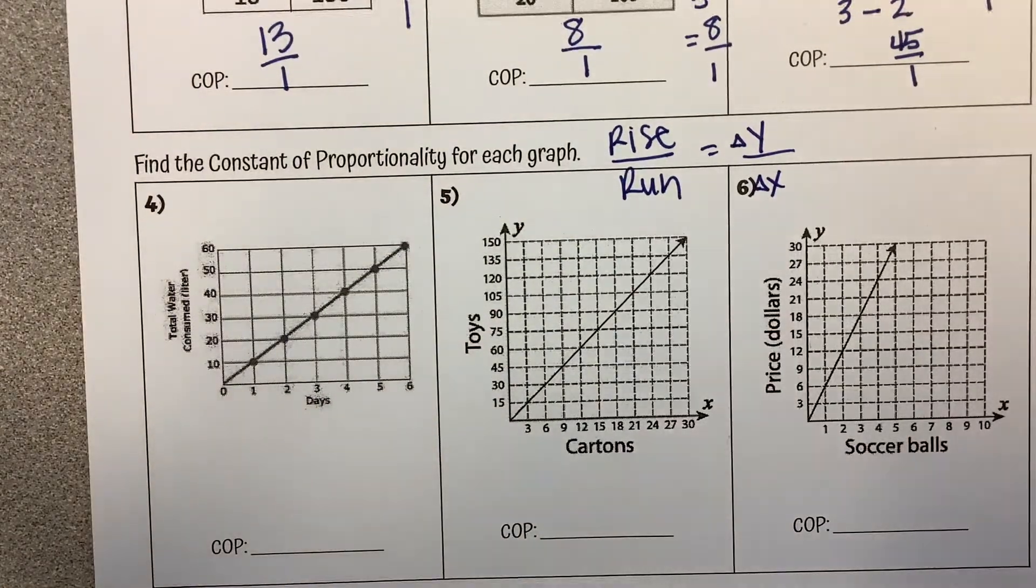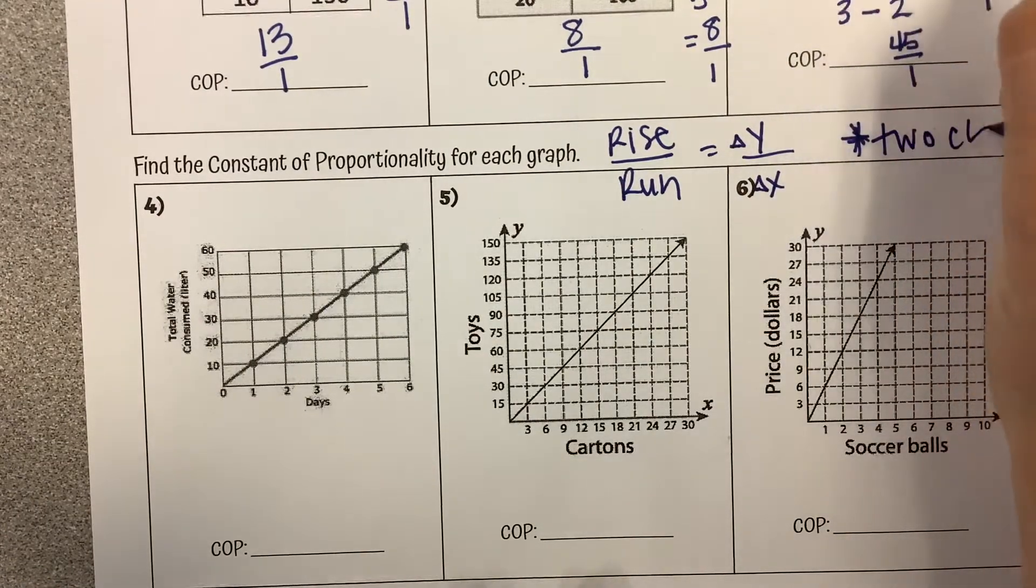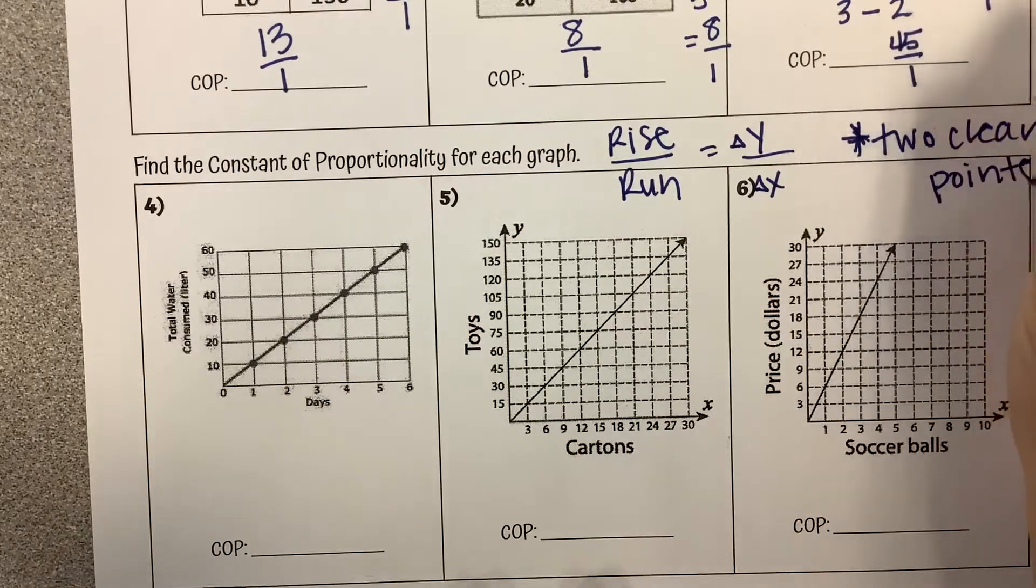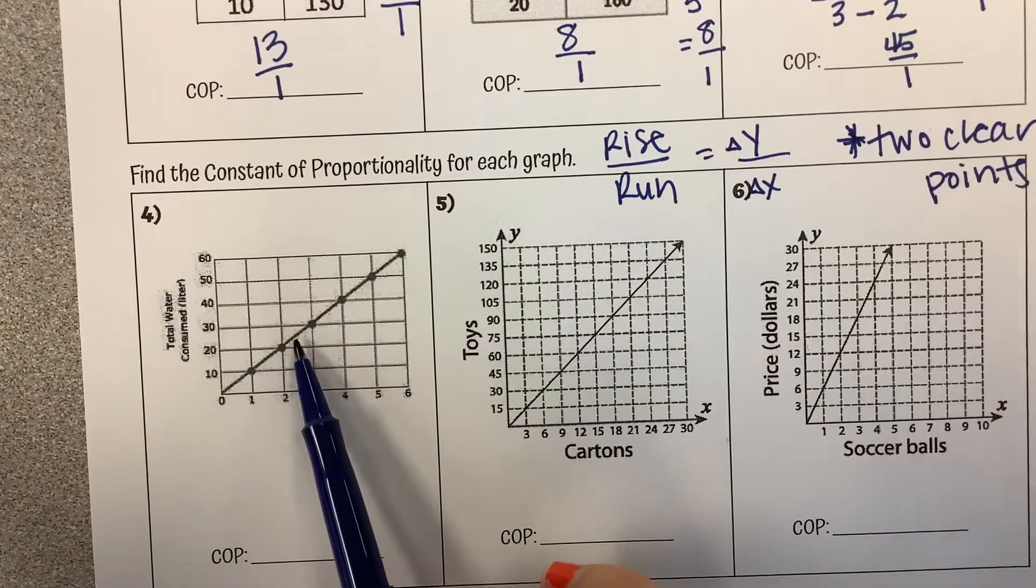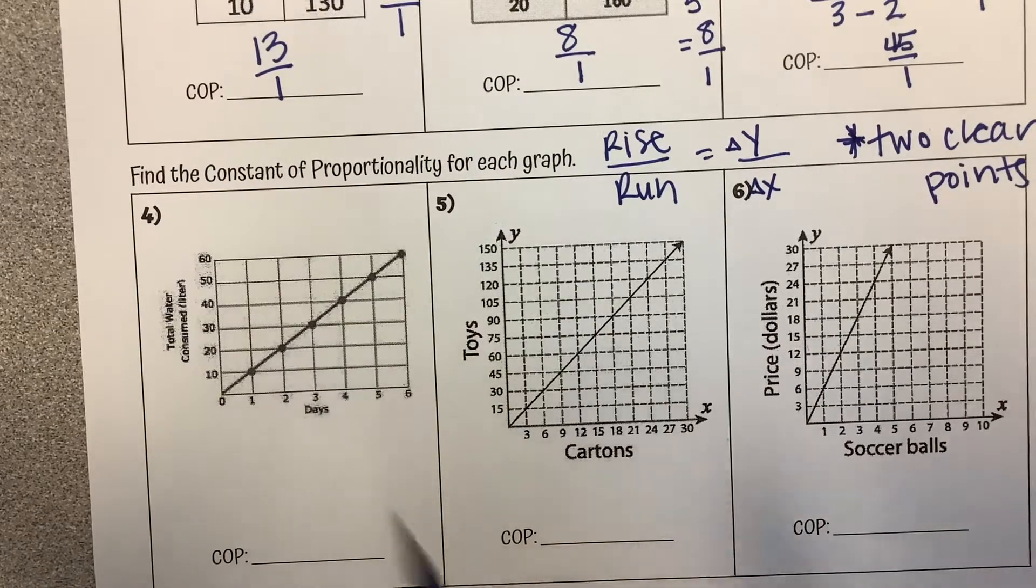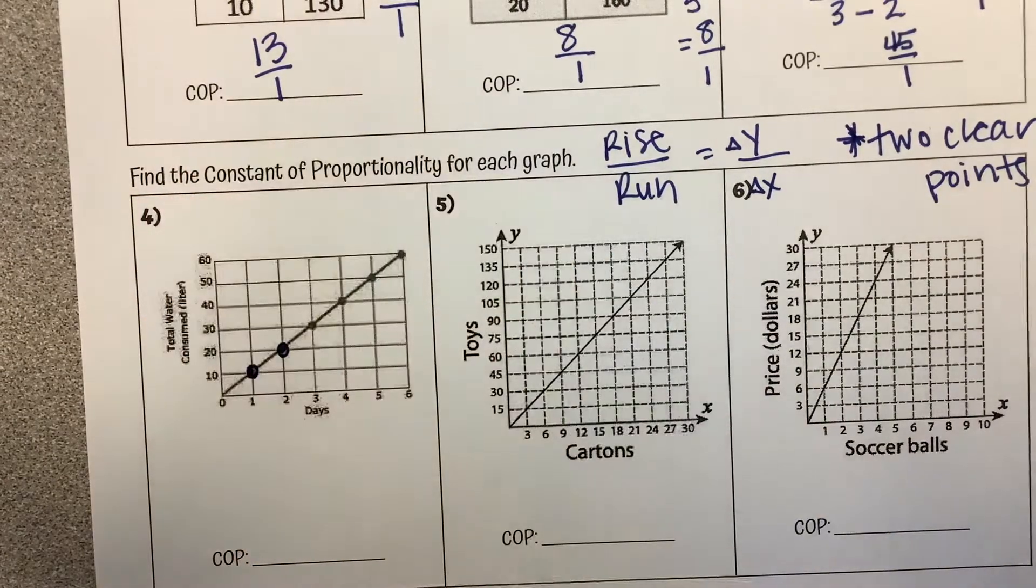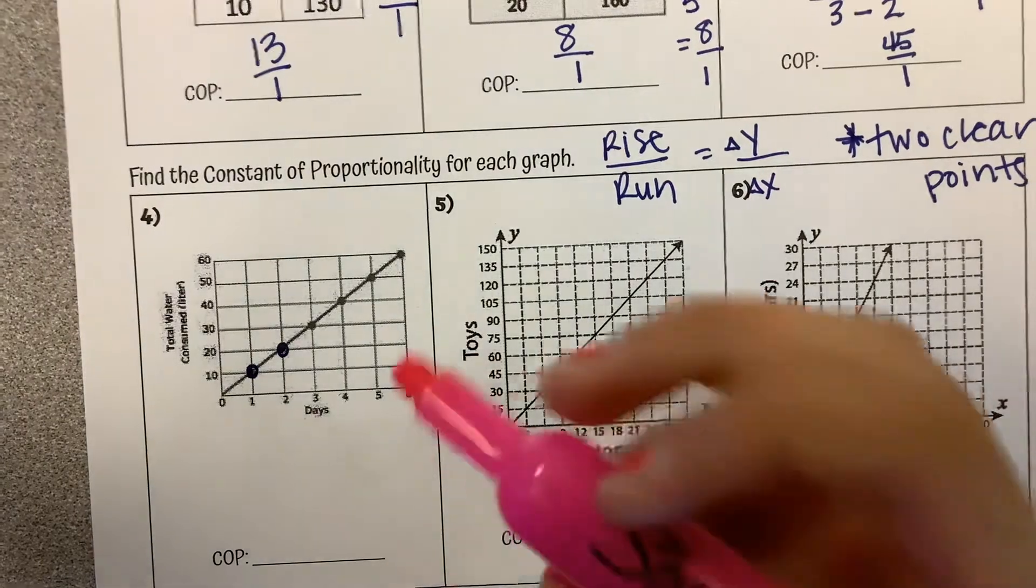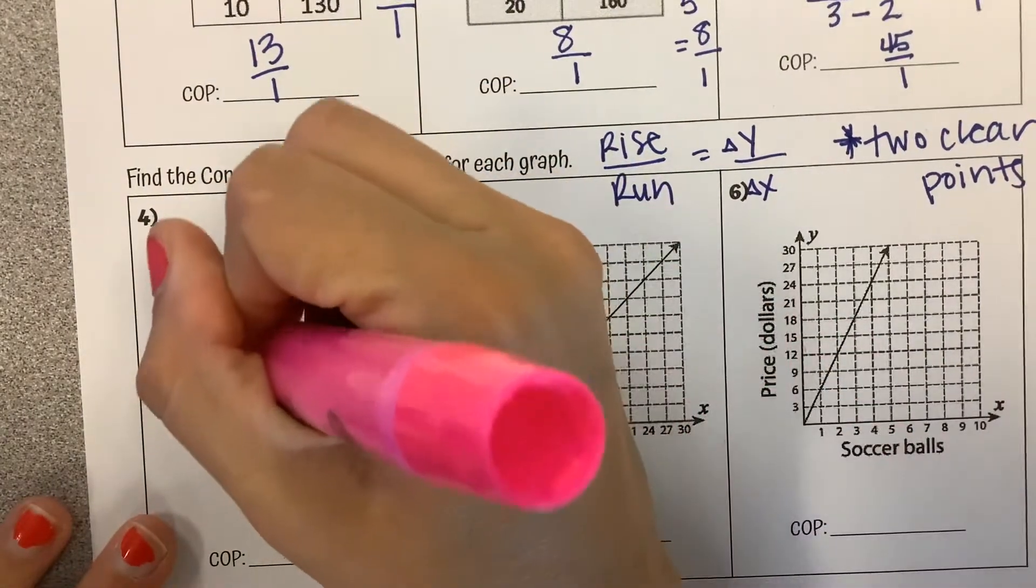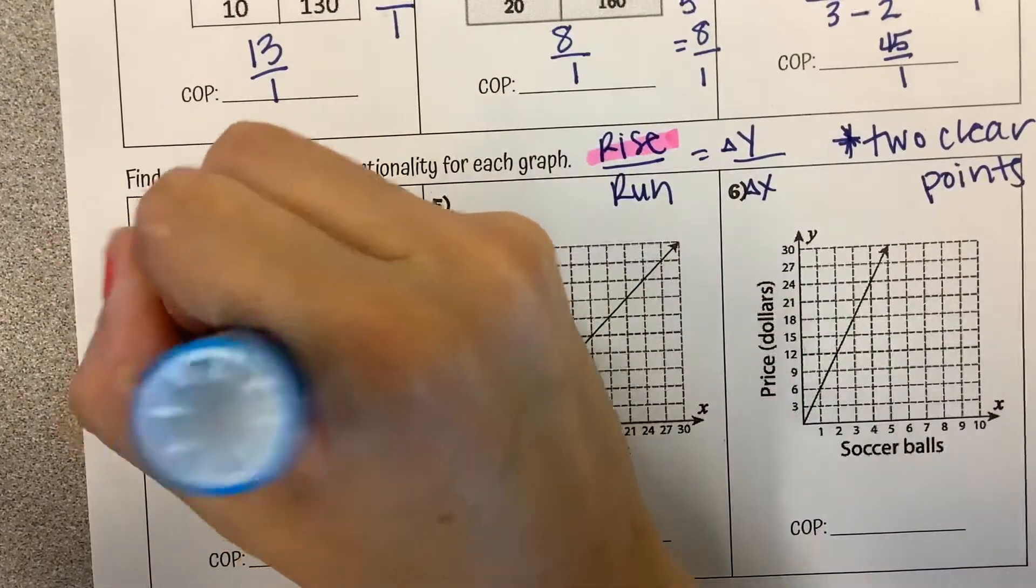So I just need to pick two clear points. It doesn't matter which ones I pick. I'm just not going to pick like a point right here in the middle of this line where I have no idea where that would fall. So I'm just picking two clear points. For example, maybe I pick these two points that are noted for me there. So I'm looking for the rise over the run.